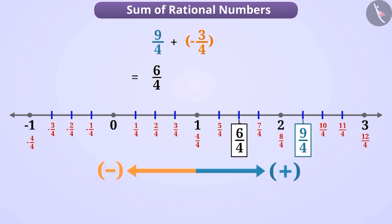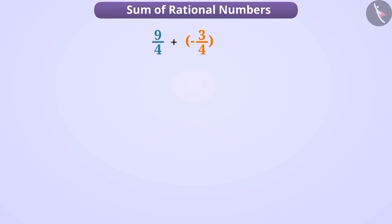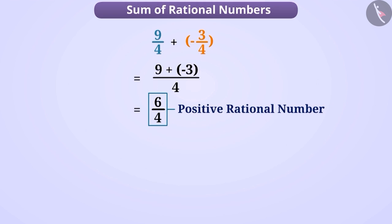Imagine if we had to add these rational numbers without the number line — how would we do this? Their sum is done in the same way as the sum of fractions, but while doing this, we need to take care of the signs. Here we see that the denominator of the two rational numbers is the same, so we will keep it the same for the result and add the numerators of both rational numbers. Here, 9 plus minus 3 is equal to 6, so we get the result 6 by 4 and it is a positive rational number.